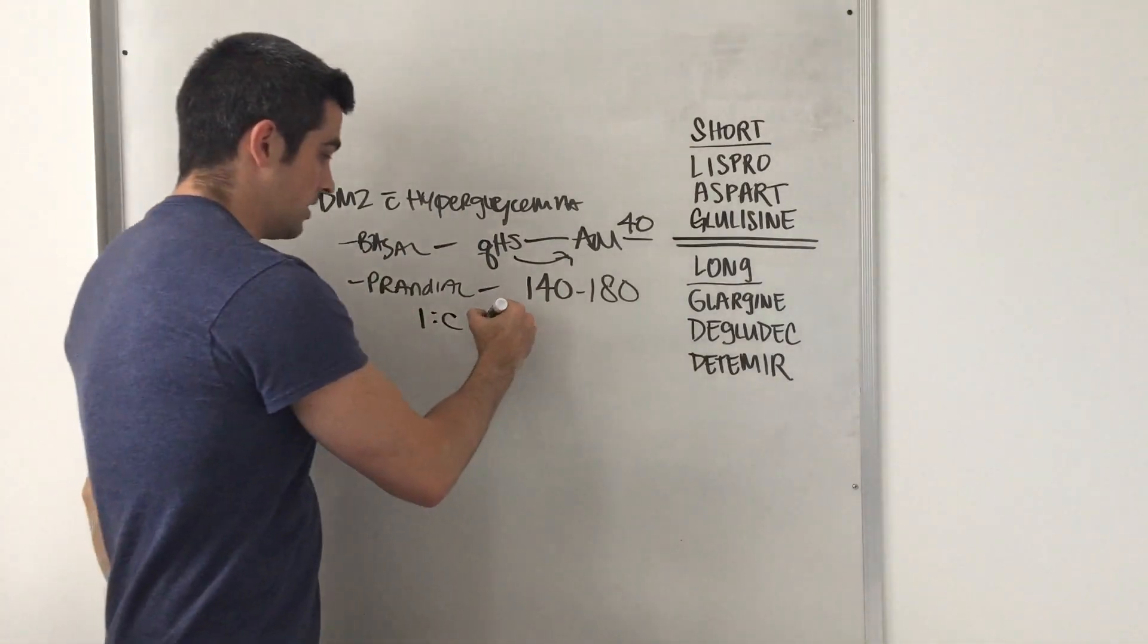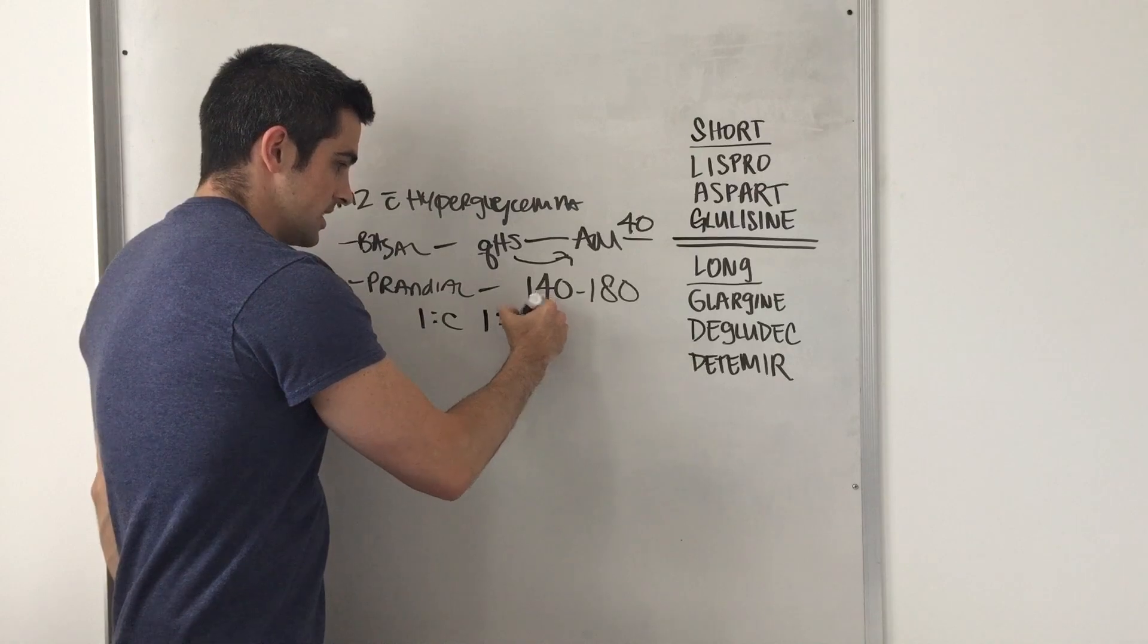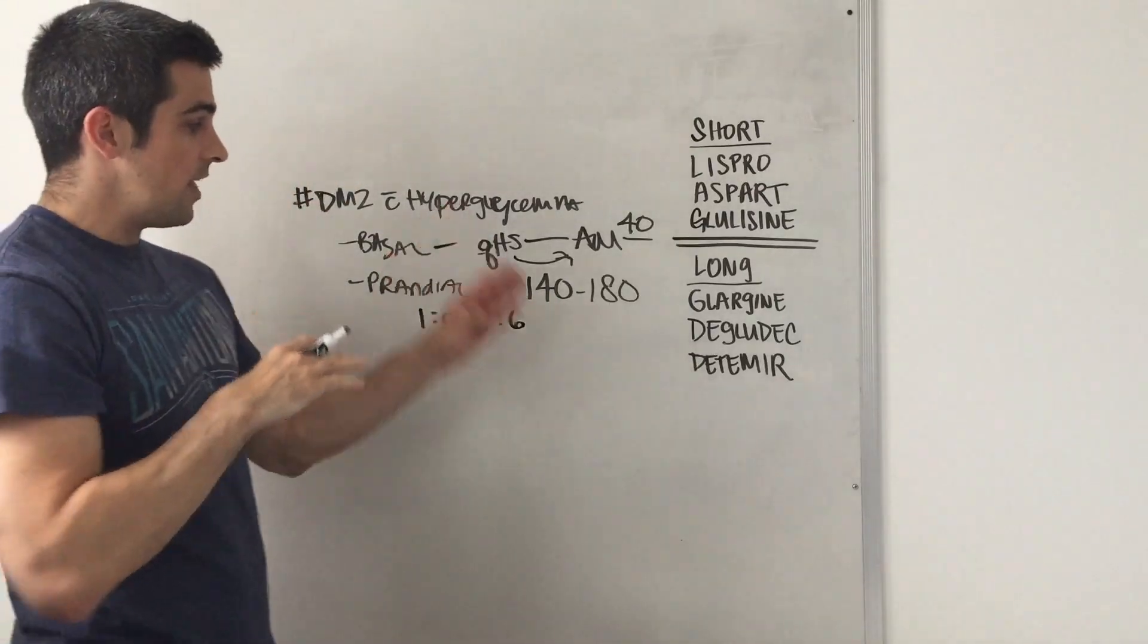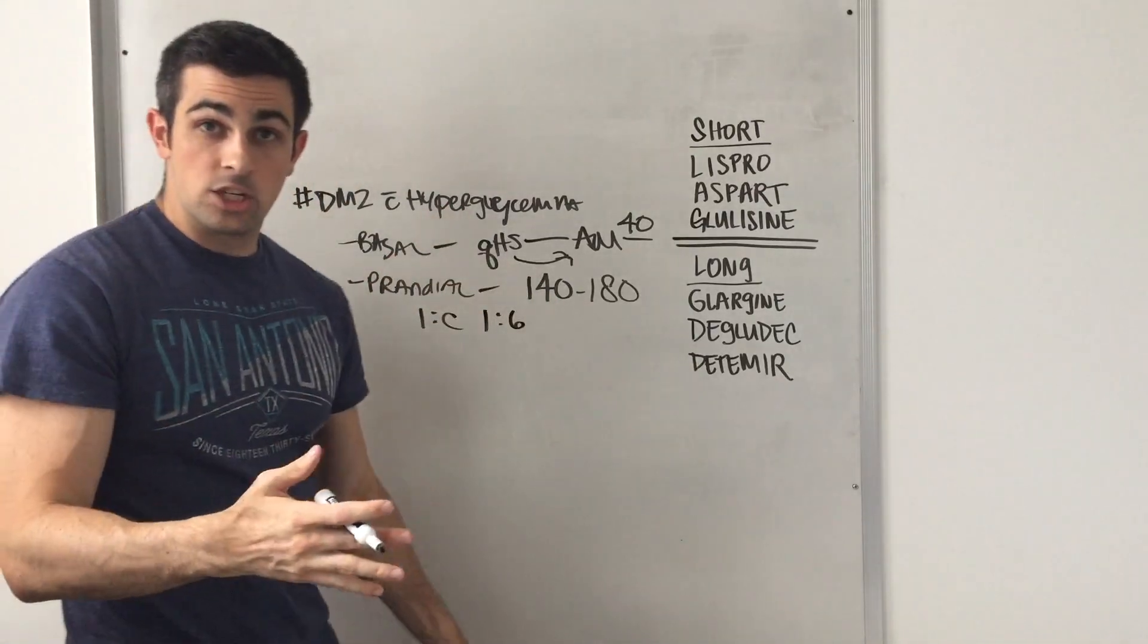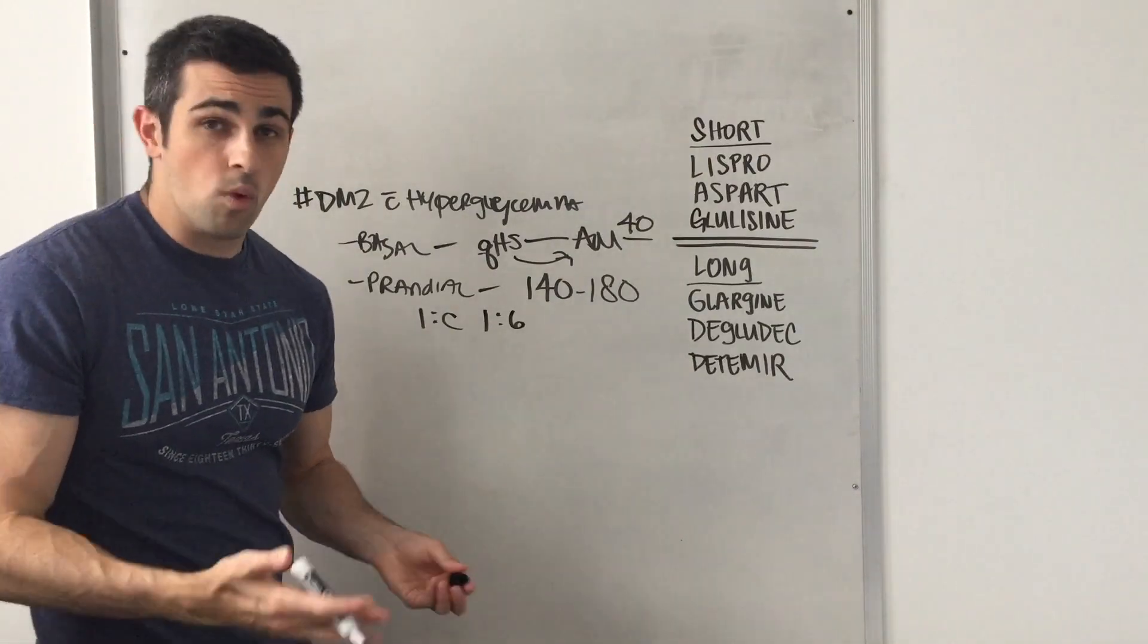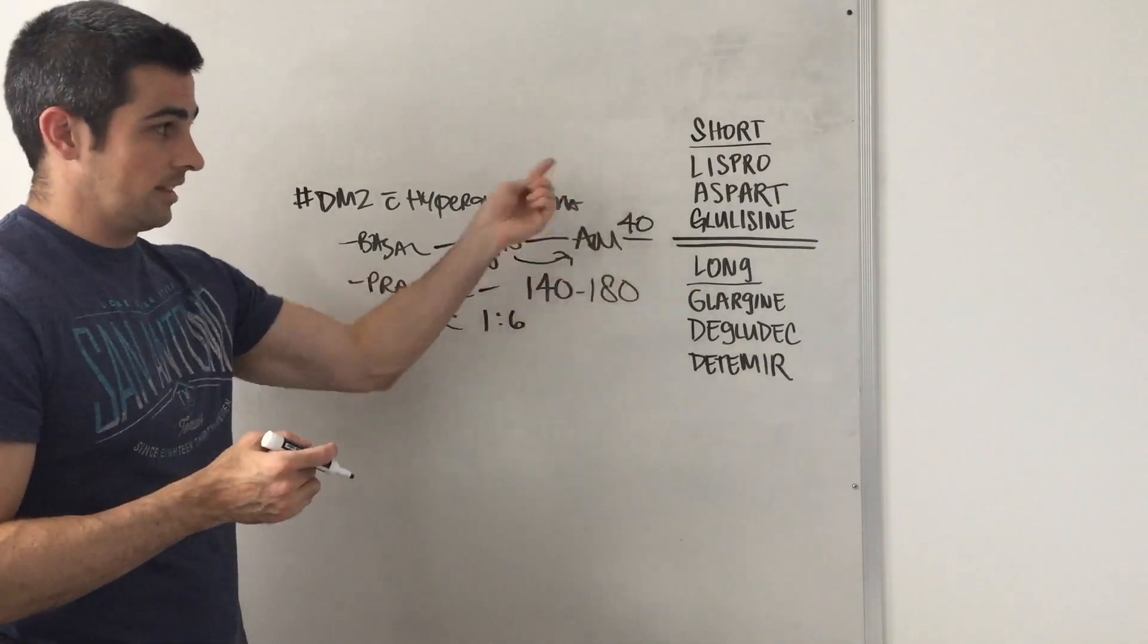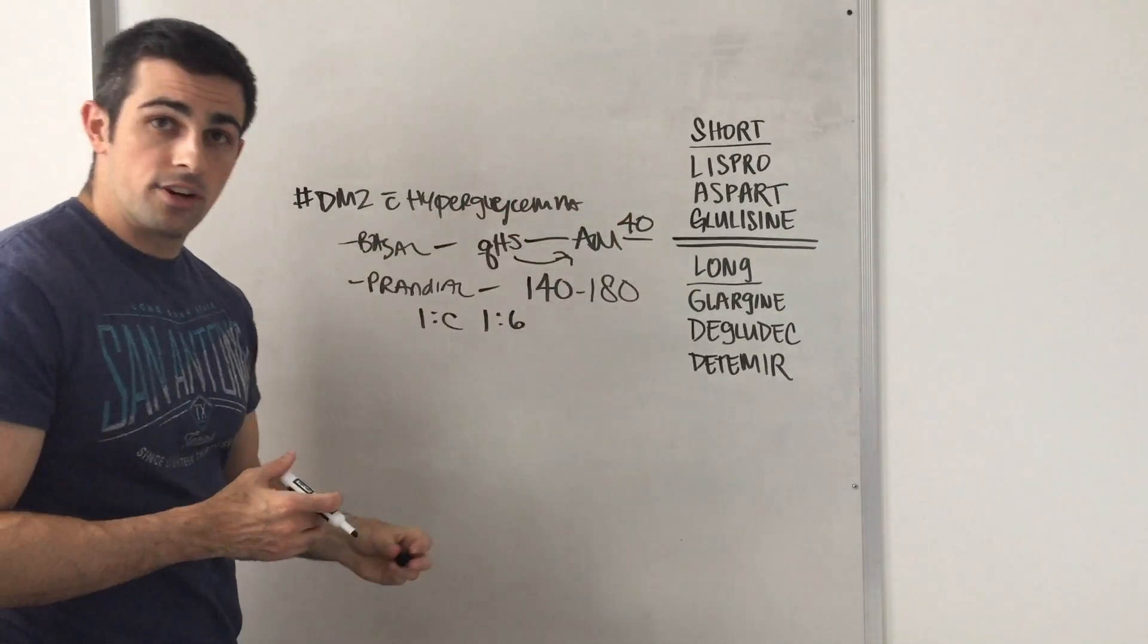You're going to write down here, insulin to carb ratio currently at a 1 to 6 ratio. And then you say suggesting to decrease ratio down to like 1 to 7.5, will assess, and you obviously do that by putting less short-actings for each meal.